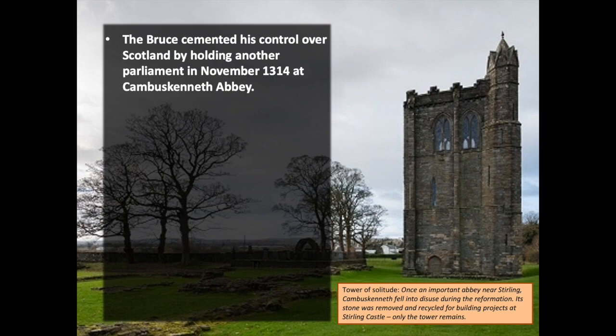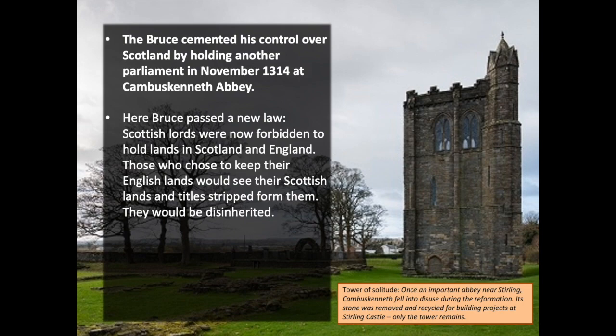Bruce cemented his control over Scotland by holding another parliament in November 1314 at Cambuskenneth Abbey near Stirling — sadly, mostly destroyed today with only the tower still remaining. Here Bruce passed a new law: Scottish lords were now forbidden to hold lands in both Scotland and England. Those who chose to keep their English lands would see their Scottish lands and titles stripped from them — they would be disinherited. Bruce did not want split loyalties amongst the Scottish nobility, as this had been a problem for John Balliol and had given English kings a tool to force Scottish nobles to betray their king.